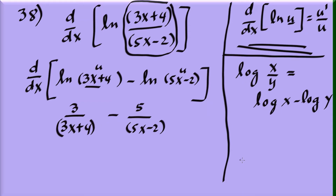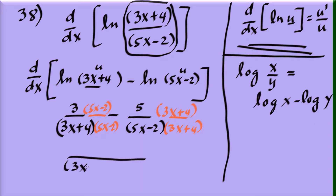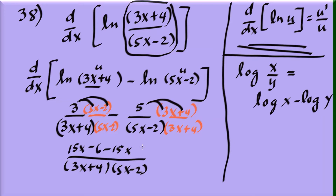To combine those two fractions, cross-multiply: multiply the first fraction by (5x minus 2) over (5x minus 2), and the second by (3x plus 4) over (3x plus 4). The shared denominator is (3x plus 4)(5x minus 2). The numerator becomes 3 times (5x minus 2) minus 5 times (3x plus 4): that's 15x minus 6 minus 15x minus 20. The 15x terms cancel, leaving negative 26.